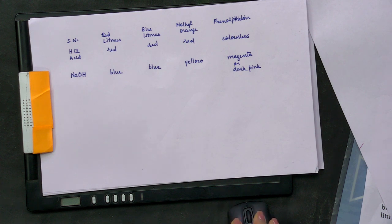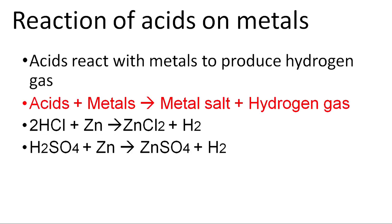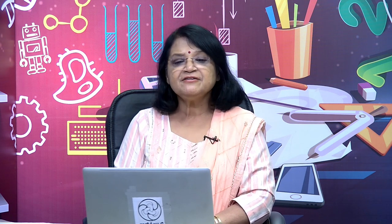Now we discuss the chemical properties of acids and bases. The first property is the reaction of acids with metals. When metals react with acids, they produce hydrogen gas, which comes out as bubbles. To test if the gas is hydrogen, we bring a burning splinter near it — it burns with a pop sound. The general reaction is: Acids + Metals → Metal Salt + Hydrogen gas.